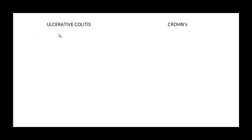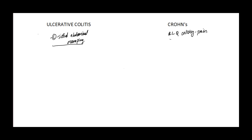First thing is first — clinically they present quite differently. Ulcerative Colitis is going to present with left-sided abdominal cramping, a crampy type of pain. While Crohn's Disease is going to present with right lower quadrant colicky type of pain. Both can come in with diarrhea and rectal bleeding, because Crohn's Disease can affect anywhere from the mouth all the way down to the anus, and if it has colon involvement, Crohn's Disease is also going to present with bleeding.